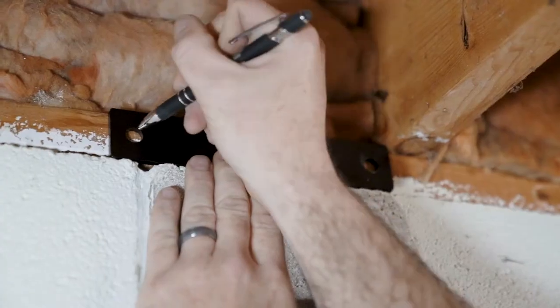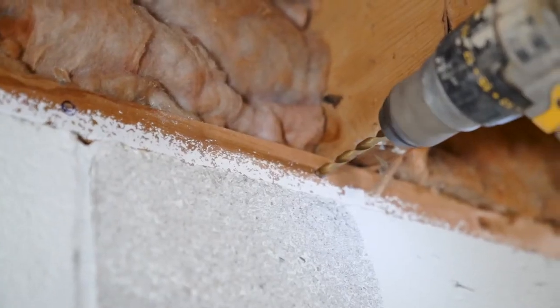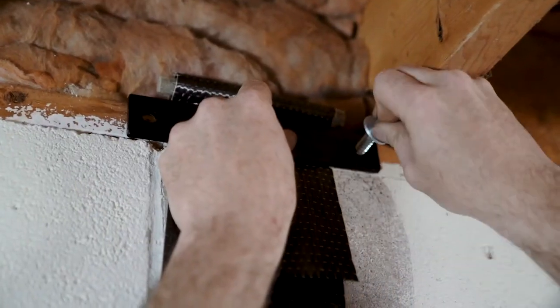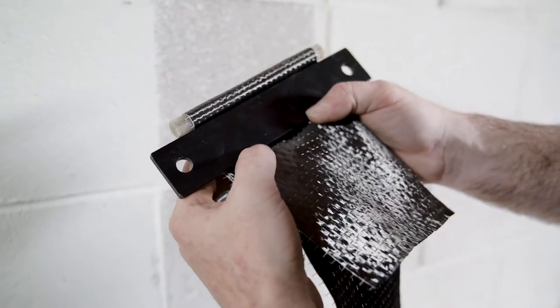Trace holes from bracket for accuracy. Pre-drill sill plate for insertion of two inch lag bolts. Install bracket to sill plate. Do not tighten until final step.